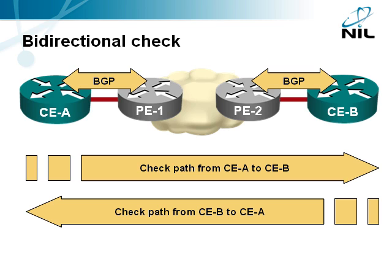However, you have to keep in mind that you need bidirectional connectivity to establish a session between the client and the server. The steps described previously therefore have to be performed in both directions — first from site A to site B, and then from site B to site A. This second check is needed to verify that the return traffic from the server can reach the client.